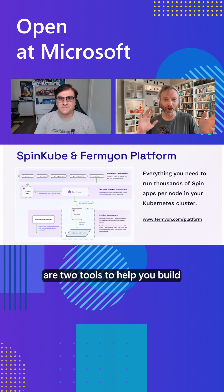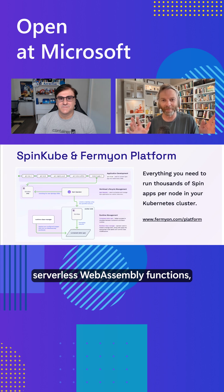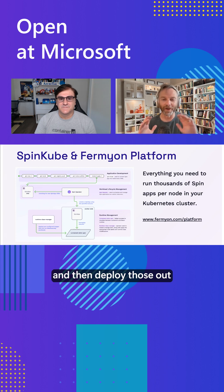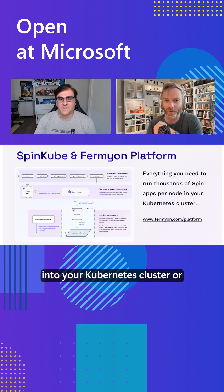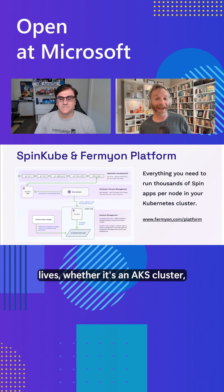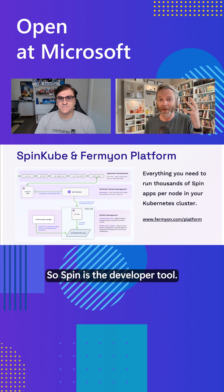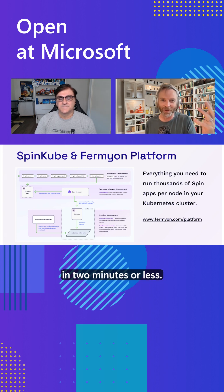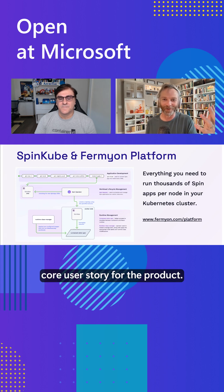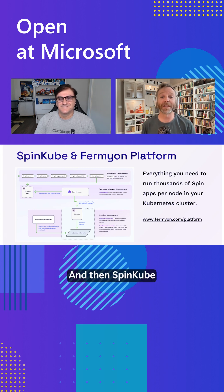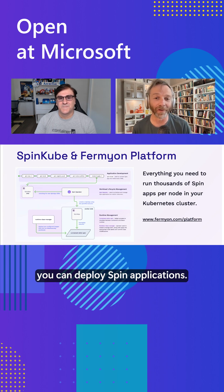Spin and SpinKube are two tools to help you build serverless WebAssembly functions and then deploy those into your Kubernetes cluster — wherever it lives, whether it's an AKS cluster, locally, or on-prem. Spin is the developer tool. With Spin, you can go from blinking cursor to deployed application in two minutes or less. That's our favorite core user story for the product. SpinKube is the Kubernetes runtime, one of the places where you can deploy Spin applications.